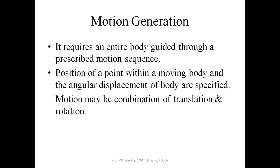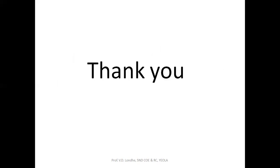Motion generation, also called body guidance, is the third task. In this case, the entire body is guided through a pre-selected sequence of motion. The position of a point within a moving body and the angular displacement of the body are specified. The motion may be a combination of translatory and rotary motion, or a combination of linear and rotary motion.